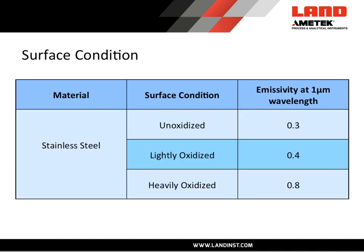Let's look at surface condition for one material — stainless steel. With an unoxidized surface, very smooth and shiny, the emissivity is 0.3, meaning only 30% of the energy is able to be emitted from the surface. If it becomes lightly oxidized, the emissivity goes up slightly. And if it's heavily oxidized, it goes up considerably.